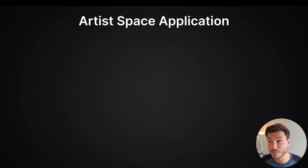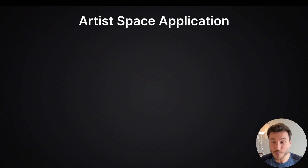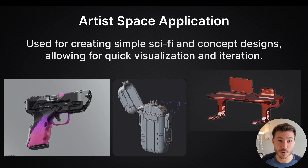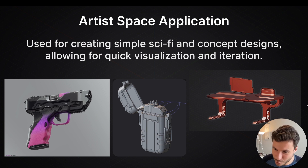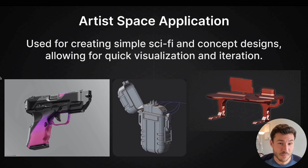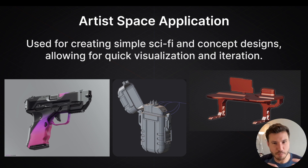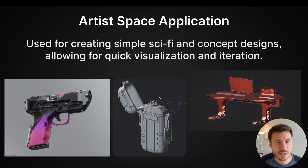Solid modeling is also very often used in the artist space. It's used for creating simple sci-fi and concept designs, allowing for quick visualization and iteration. That was actually the original point of Plasticity before people started using it so much for surface modeling. With solid modeling, you can create amazing sci-fi concept designs — those bulky, boxy kinds of shapes — because you can work so fast with booleans.